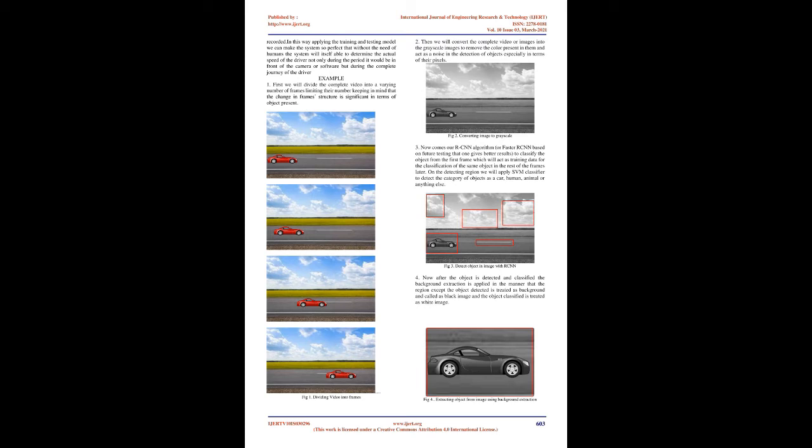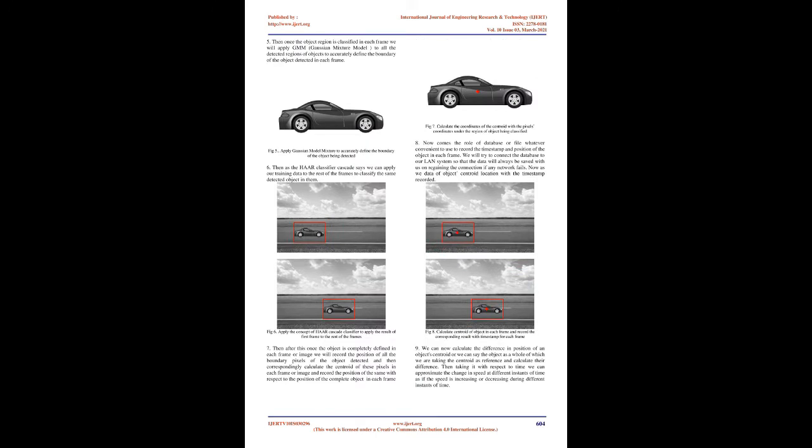The basic idea of this proposal is to calculate the speed of vehicles in video with respect to frame. At each frame, we will detect the position of the object and track it by comparing it to the position of the same in the previous frame. At the same time, we will calculate the speed of the vehicle by estimating the rate of change of position in two corresponding frames. First, we will classify the video into different frames, and on each of those frames treated as images, we will apply the complete processing of the algorithm.